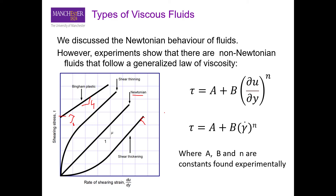For fluids where viscosity is a function of shear stress, we can write a more generalized form using a power law equation: tau = a + b(∂u/∂y)^n, where a, b, and n are constants. This shows that viscosity is no longer constant, and you need a different relation between velocity gradient and shear stress. The term (a + b) gives you the equivalent of viscosity, as in the Newtonian case. The exponent n dictates whether viscosity is increasing or decreasing.